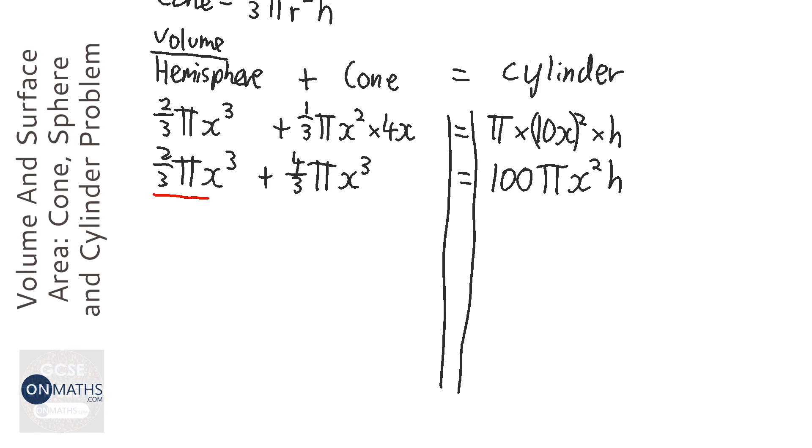Okay, now if you notice on the left hand side, these two here are the same, there's both pi x cubed, so we can just add them together. So it's going to be two thirds plus four thirds, so that's going to be six thirds or just two.